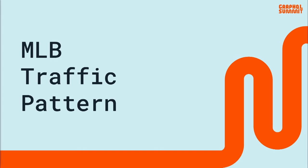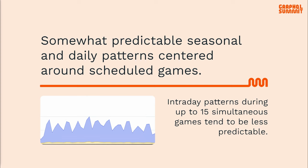Let me take a step back and talk about the MLB traffic pattern we see. Somewhat predictably, we see more requests during the season, and within individual days, we see more requests when there are live games. From a high level it's a pretty predictable pattern. However, if you look at individual days, there tends to be a lot of variation depending on how many games are going on simultaneously — there might be up to 15 — and it gets a little less predictable.